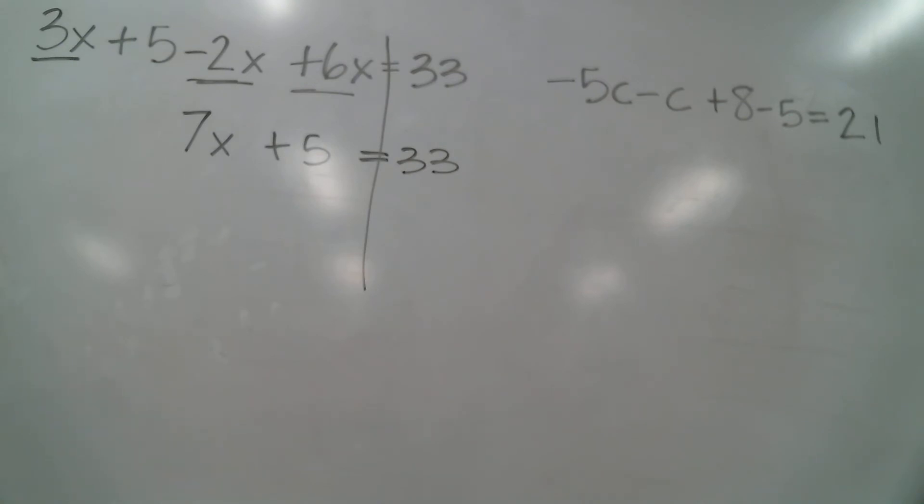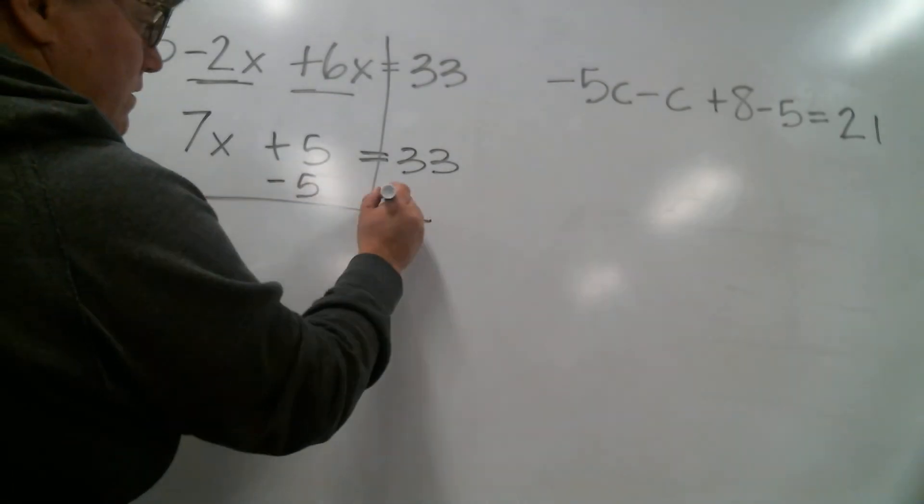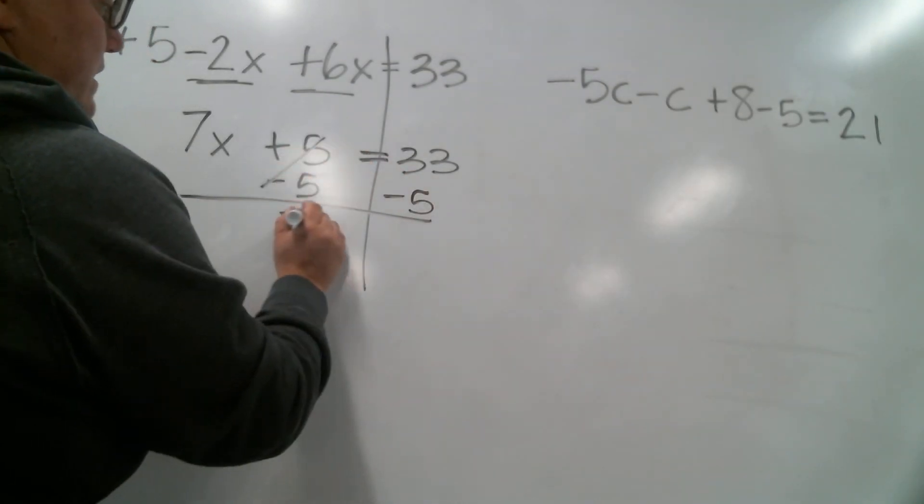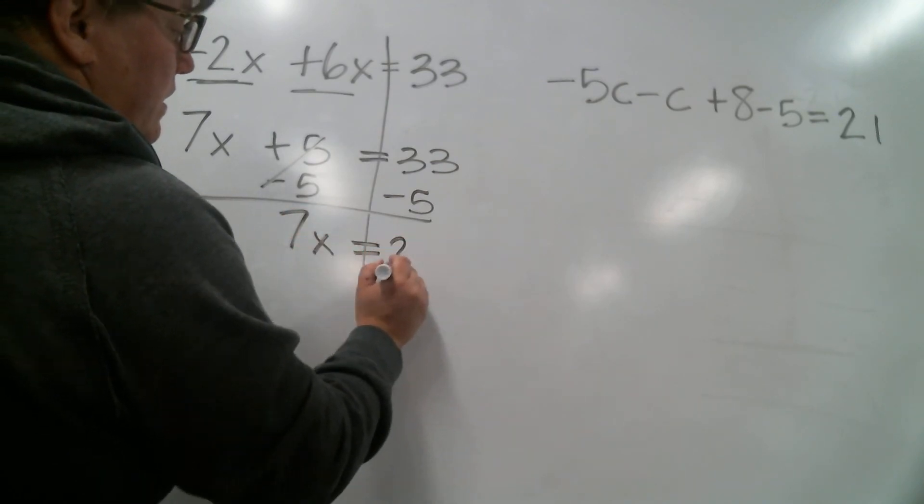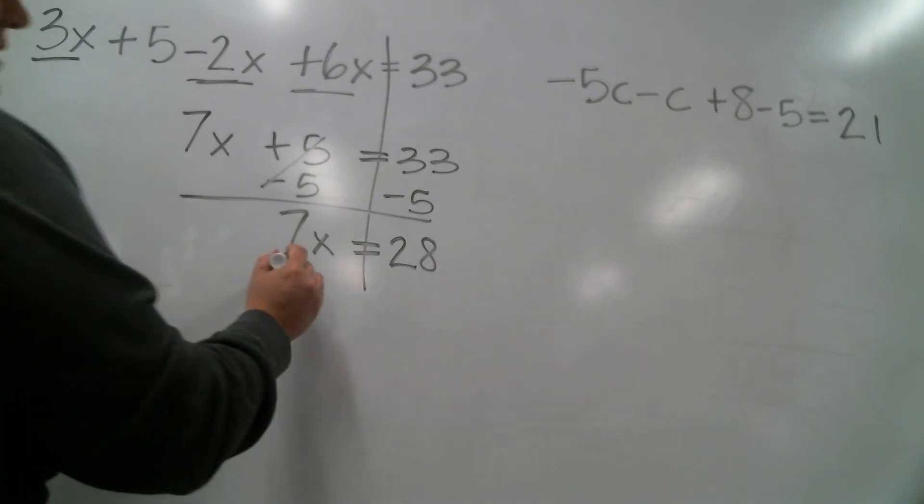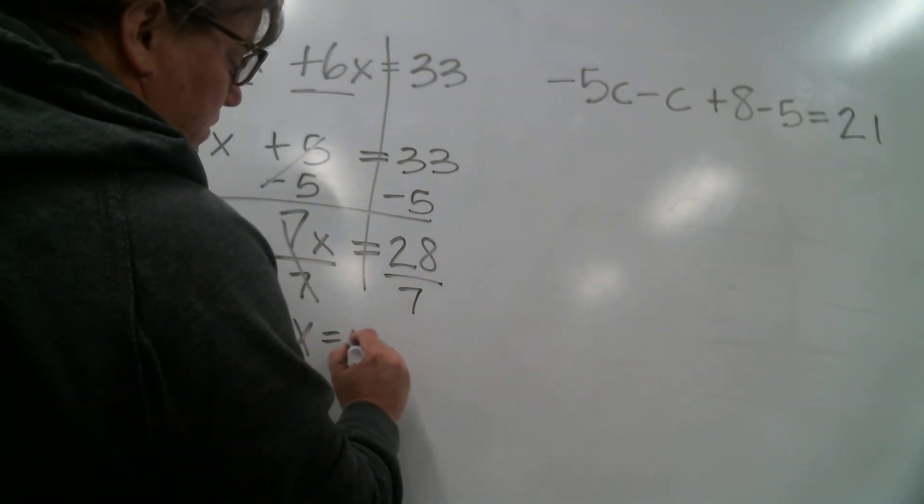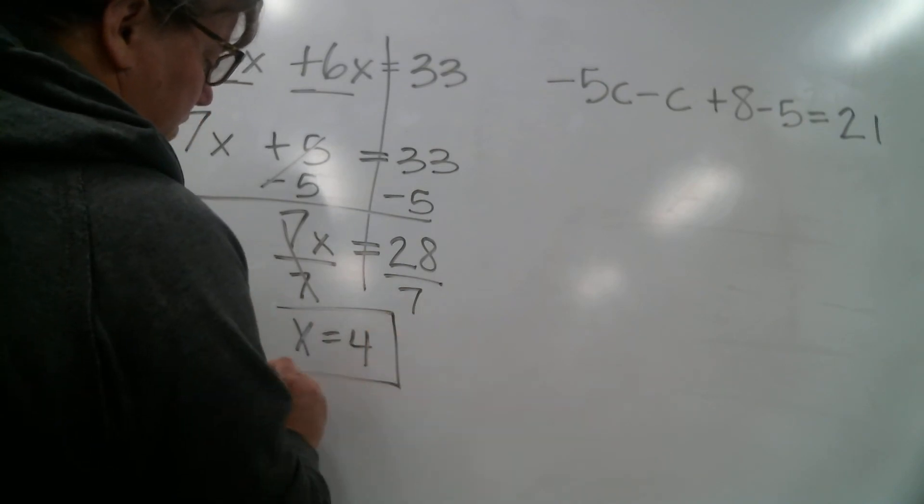Okay, then I've got a regular two step equation. So I'm gonna subtract 5. And I get 7x equals 28. My last step would be divide by 7. And I get x equals 4.